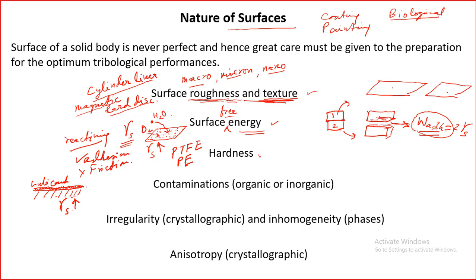Hardness is also a surface property and decides wear resistance. High hardness is associated with high wear resistance. It is not just hardness — toughness of the material is also important. But in general, we go for high hardness for most bearing applications as well as tool applications.